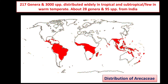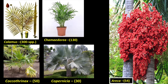Let us study the geographical distribution of family Arecaceae. About 217 genera and 3000 species are distributed widely in tropical and subtropical regions of the world, and a few are distributed in warm temperate regions. From India, about 28 genera and 95 species have been reported so far.